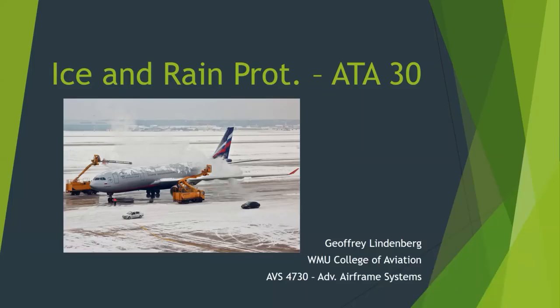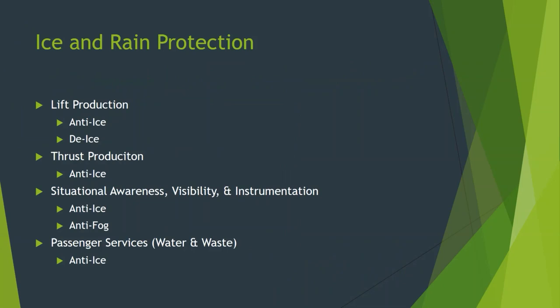In this lecture video, I'm going to discuss ice and rain protection systems for transport category aircraft. These systems have a few different goals. The first one is for lift production — to protect the ability of the wings and the tail, the different surfaces, to produce lift. These can be either anti-ice or de-ice in order to do that.